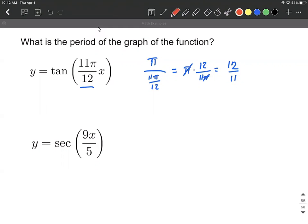For the second one here, we're going to start with the original period for secant, which again is 2π, and we're going to divide by this multiple on the inside, so it's multiplied by 9 fifths. So we're going to divide by that.